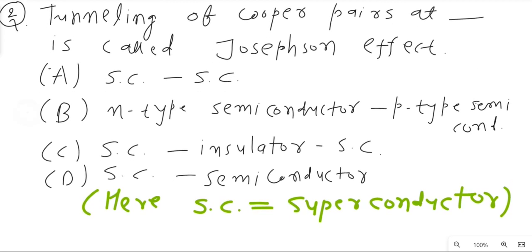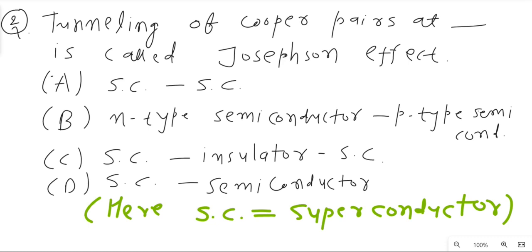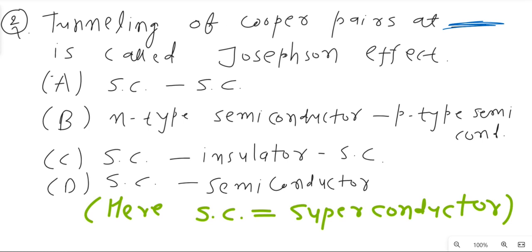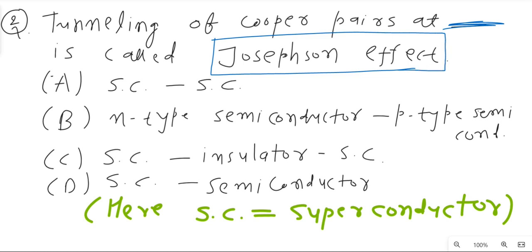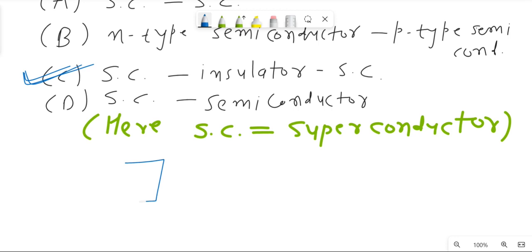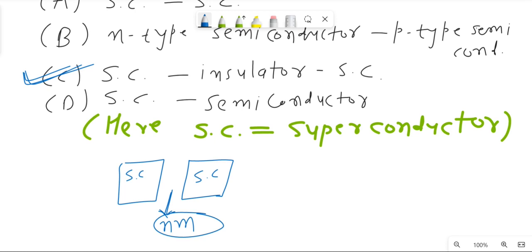The second MCQ is a direct theoretical question from superconductivity: tunneling of Cooper pairs across a blank is called the Josephson effect. From theory, in the Josephson effect there is a superconductor–insulator–superconductor junction, where the insulator is a very thin layer of nanometer size. So the correct option is C: superconductor–insulator–superconductor.